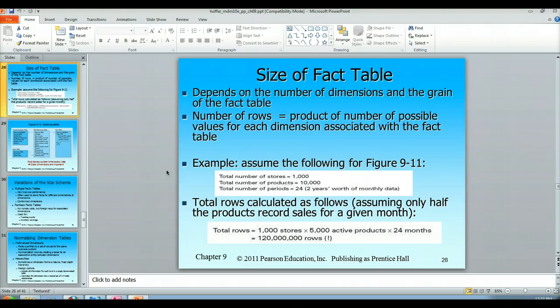If you're getting finer grained, that means you're adding dimensions. The number of rows will equal the product of the number of possible values for each dimension associated with the fact table. As you grow in dimensions, you multiply the product of possible values for each dimension.